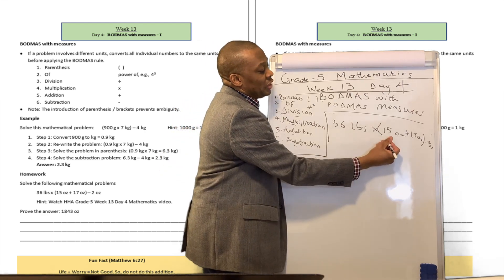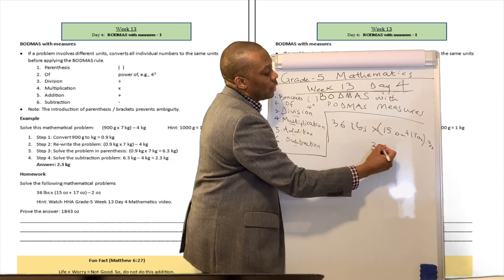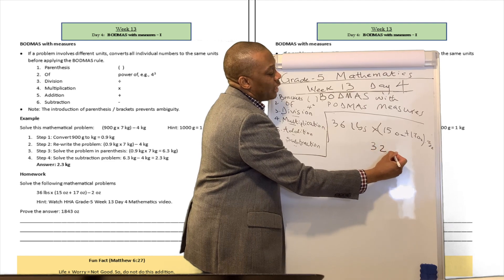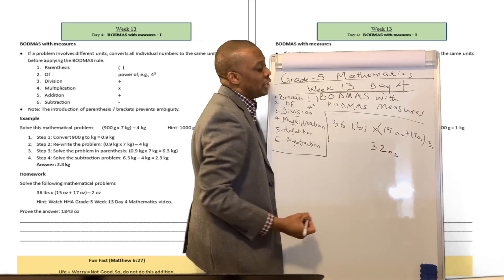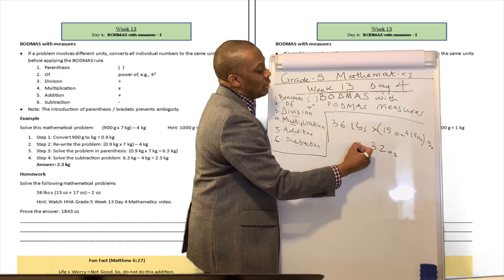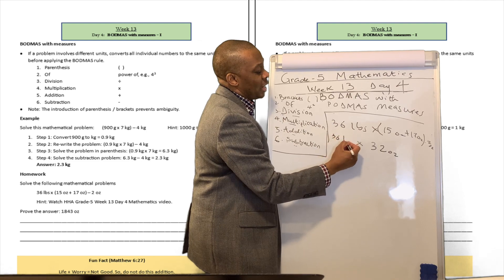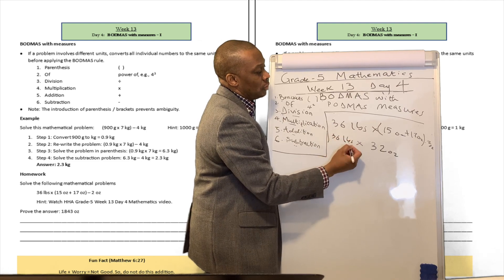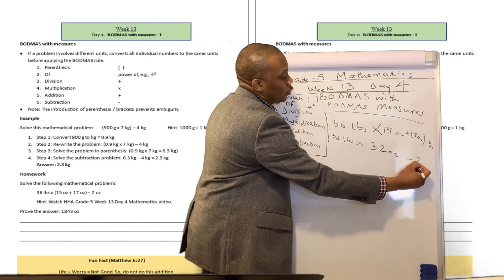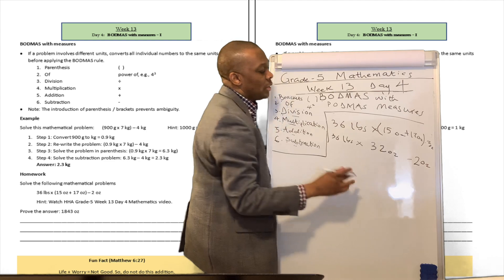Since both numbers have the same units, we can perform the operation inside the brackets right now. So what is 15 plus 17? That's going to be 32 ounces. Don't forget your units. Then we multiply by 36 pounds and subtract 2 ounces.